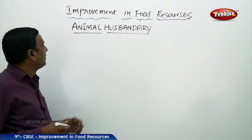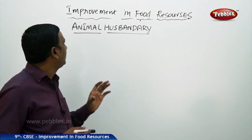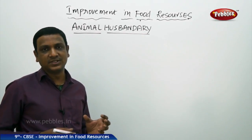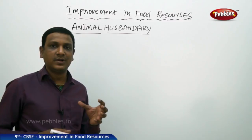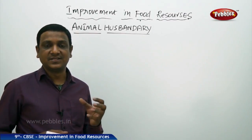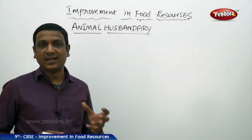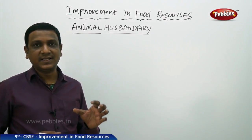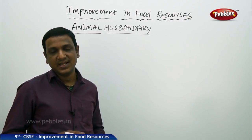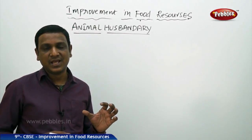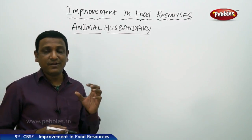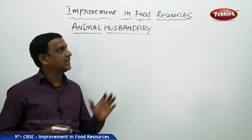The next topic is animal husbandry, which is also part of the improvement in food resources. Food resources include plant food resources as well as animal foods. Animal foods include dairy products like milk, eggs, fish, poultry, chicken, and other meats. Animal husbandry is the scientific management of animal livestock.